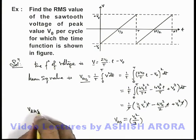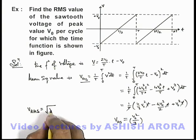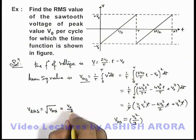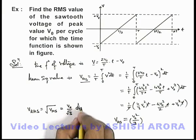We can directly write that the RMS value of the voltage will be the root of Vms, the mean square value, so this will be V₀/√3. That is the answer to this problem.